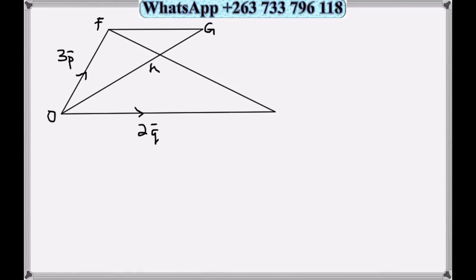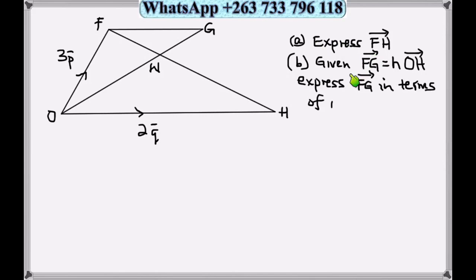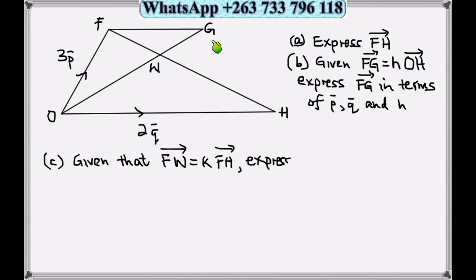Let me look at a more advanced question. This was tested in November 2015. Part a is express vector FH. You can see that OF is 3 vector p, OH is 2 vector q, and here is W and G. Given that vector FG is equal to h, this is a constant, times vector OH. Express FG in terms of p, q, and h.